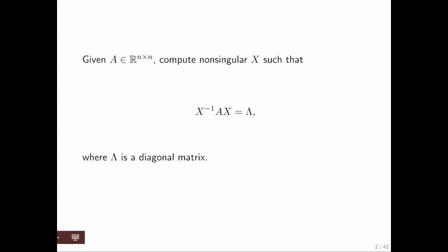Diagonalization has to do with computing a non-singular matrix X, such that if you take a square matrix A, and you multiply that matrix on the left by X inverse, and on the right by X, you get a diagonal matrix, so that this matrix here has entries on the diagonal and zeros off the diagonal.